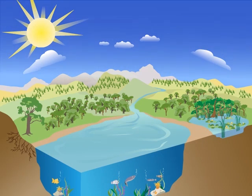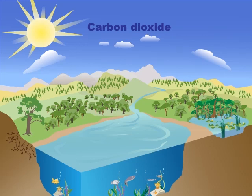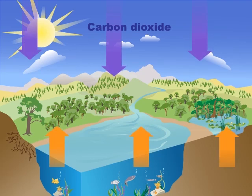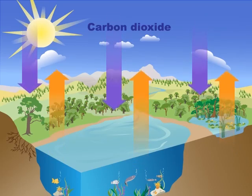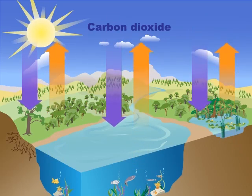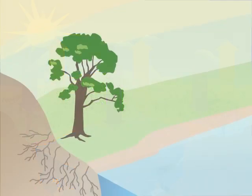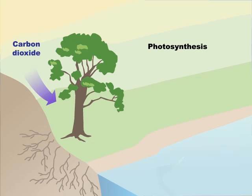In the atmosphere, you'll find carbon in the form of a gas called carbon dioxide. There are many ways that carbon dioxide moves into and out of the atmosphere through natural processes. For example, one way carbon dioxide is taken out of the atmosphere is through photosynthesis.